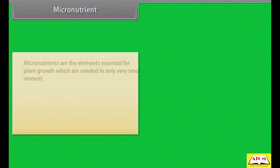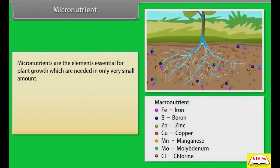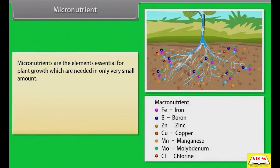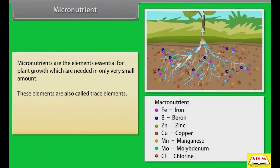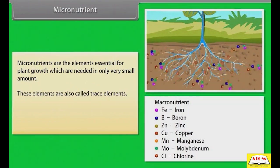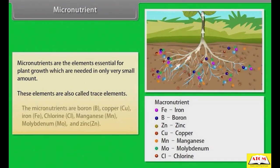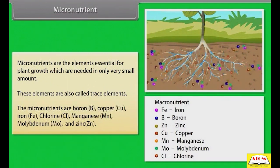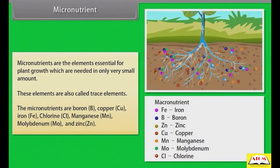Micronutrients are the elements essential for plant growth which are needed in only very small amounts. These elements are also called trace elements. The micronutrients are boron, copper, iron, chlorine, manganese, molybdenum and zinc.